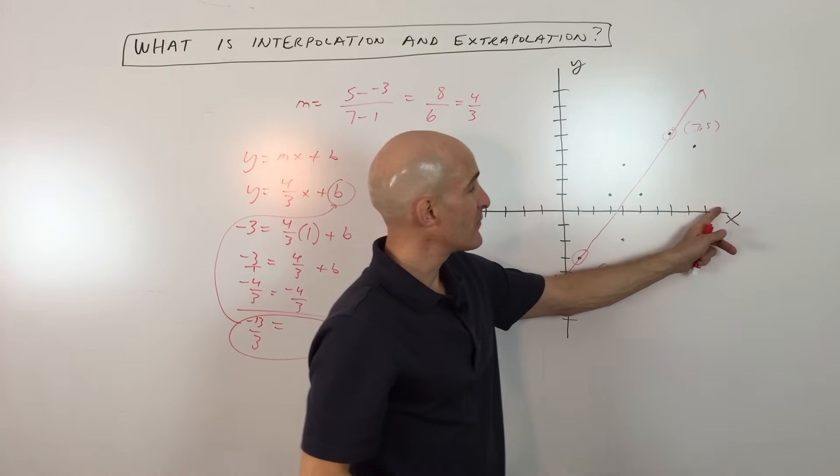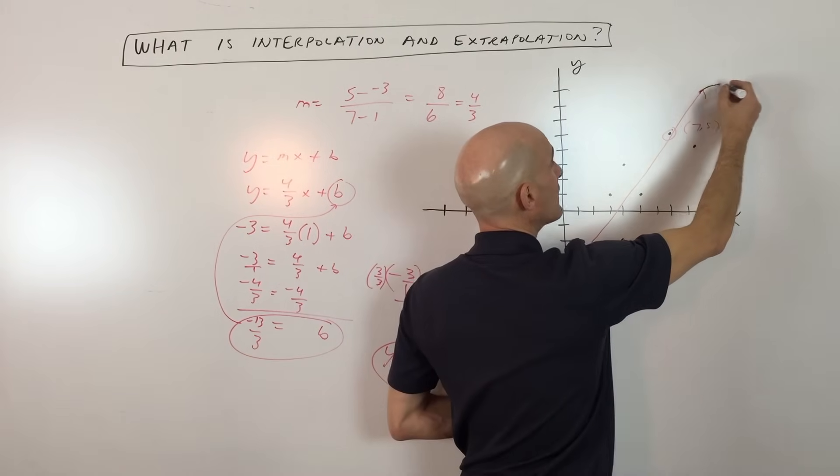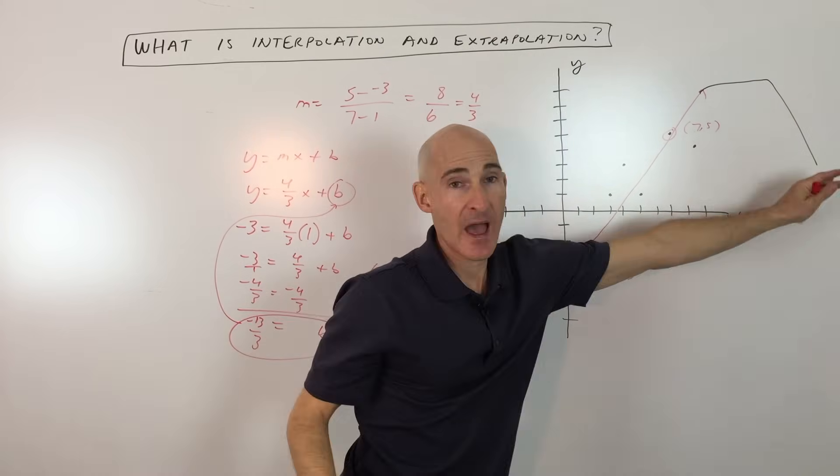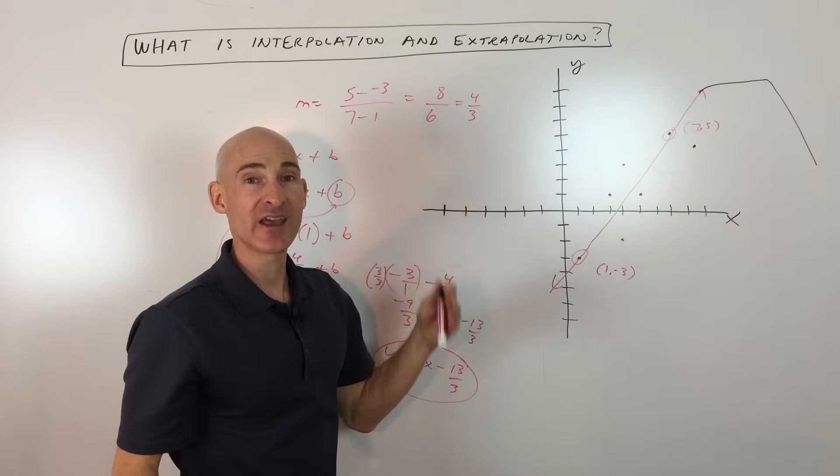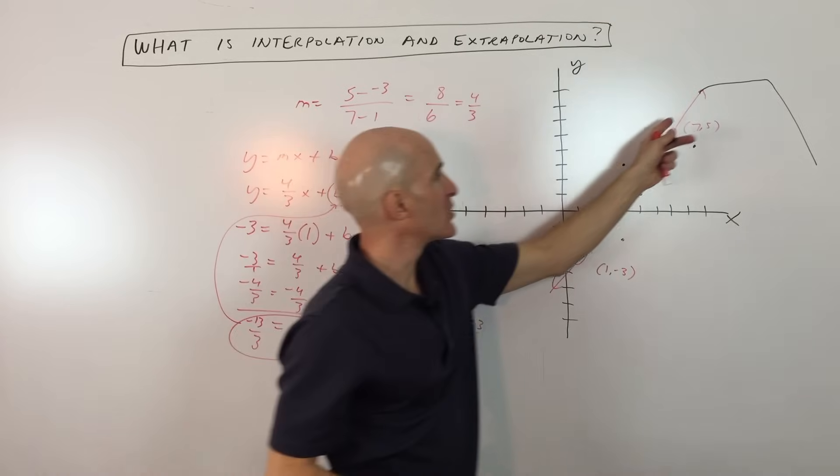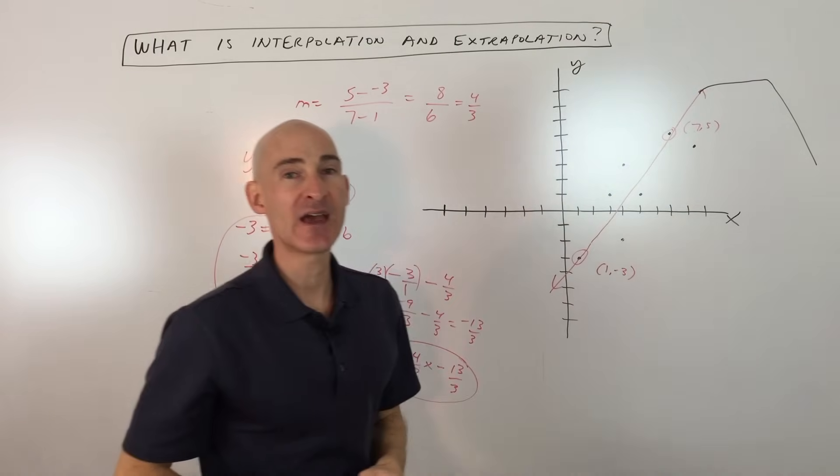However, with extrapolation, say for example, we pick a point way out here, it's possible that the graph all of a sudden could level off or maybe even go down, right? We don't know what's going to happen way out on the extremes beyond. And it's possible that it could continue up at this rate. And we could use our line of best fit to find that data point.